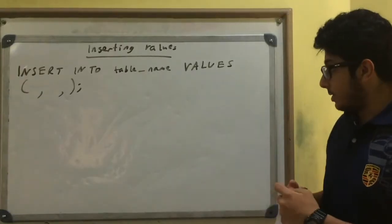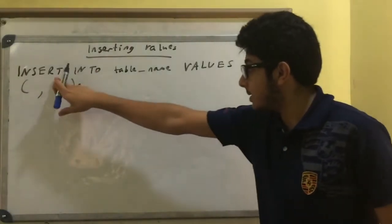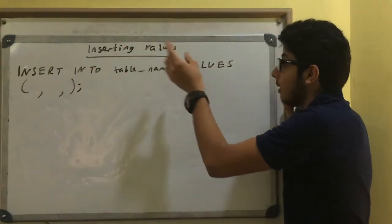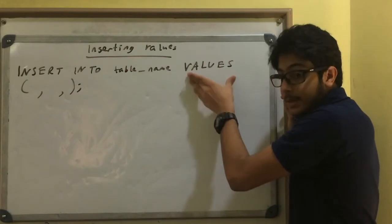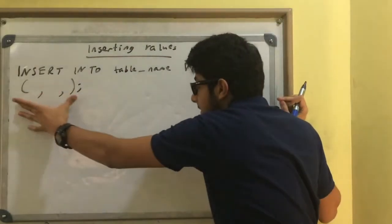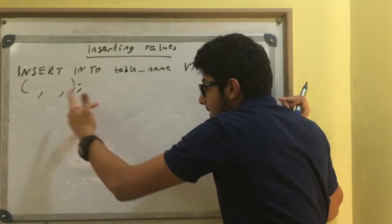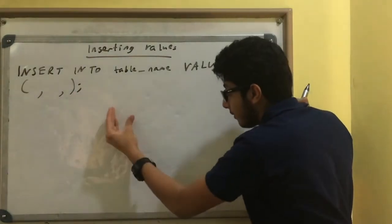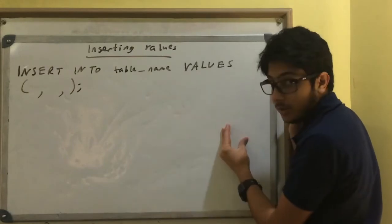To insert values into your table, you use this statement: INSERT INTO in capitals, and then the table name, VALUES in capitals. And then the brackets, and each comma will separate each thing you want to put in. So then it will put it in order from the first field to the second field to the third field.